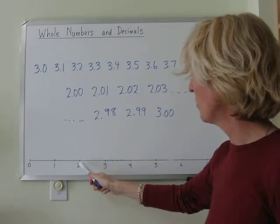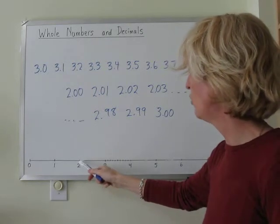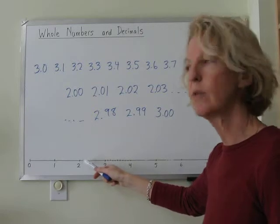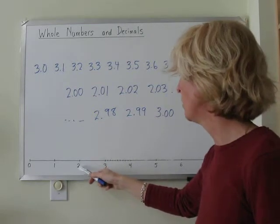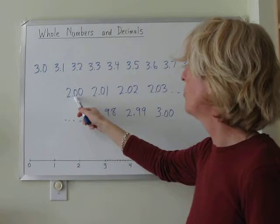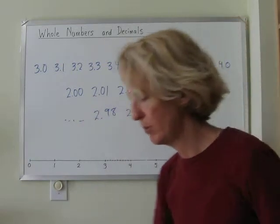So, if the number line has been divided into one hundred equal steps between the whole number of two and three, we show that by using two decimal positions.